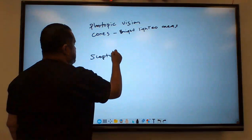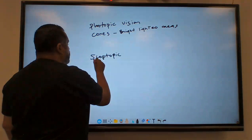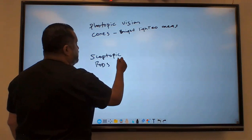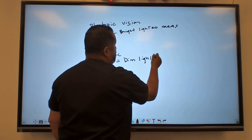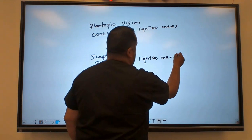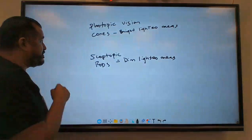And scotopic, scotopic vision is going to be using rods. And we use it for dim light, dim lighted areas like nighttime, dark areas. So it uses rods.